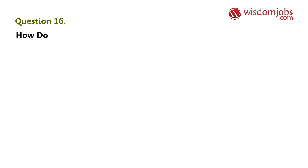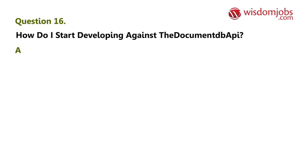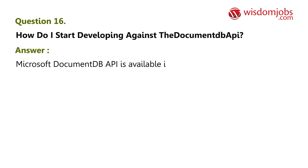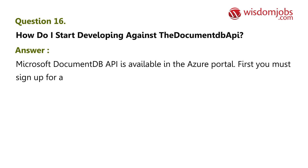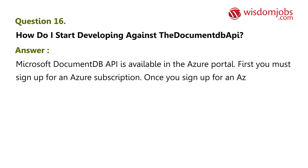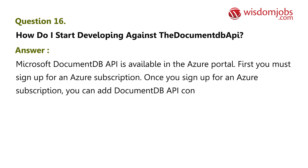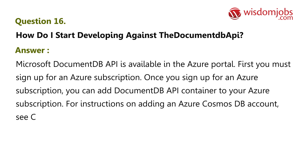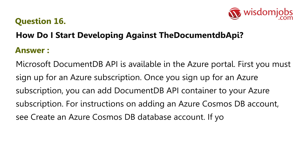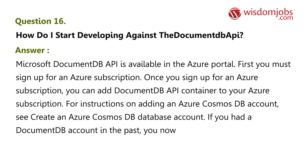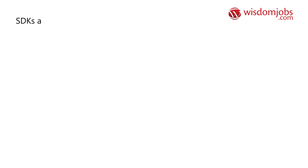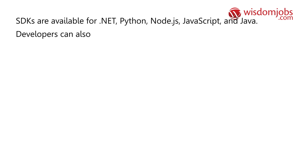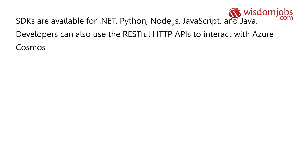Question 16: How do I start developing against the Document DB API? Answer: The Document DB API is available in the Azure portal. First, you must sign up for an Azure subscription. Once you sign up, you can add a Document DB API container to your Azure subscription. For instructions on adding an Azure Cosmos DB account, see 'Create an Azure Cosmos DB database account.' If you had a Document DB account in the past, you now have an Azure Cosmos DB account. SDKs are available for .NET, Python, Node.js, JavaScript, and Java. Developers can also use the RESTful HTTP APIs to interact with Azure Cosmos DB resources from various platforms and languages.